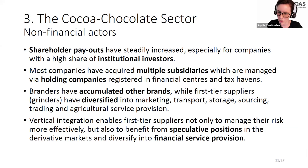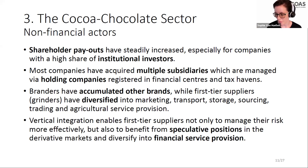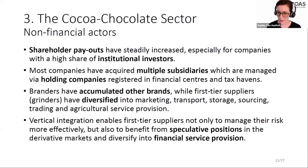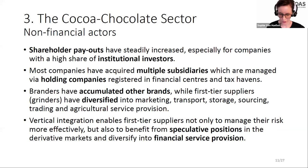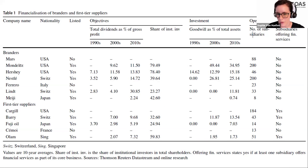Most companies have acquired multiple subsidiaries managed by holding companies often registered in tax havens. Branders have concentrated mainly through accumulating other brands horizontally. First-tier suppliers, on the other hand, have diversified quite vertically into marketing, transport, storage, sourcing, trading, and agricultural service provision — active across the whole upstream of the food chain and the cocoa-chocolate chain. This heavy vertical integration gives them an information advantage in trading and risk management.